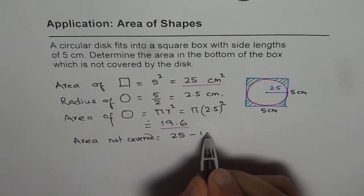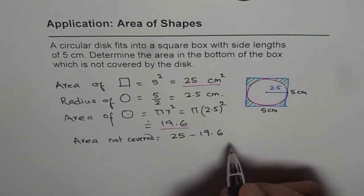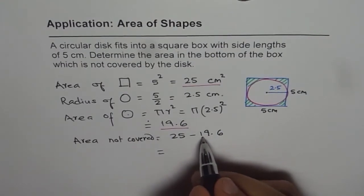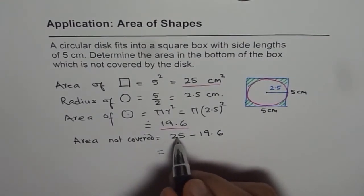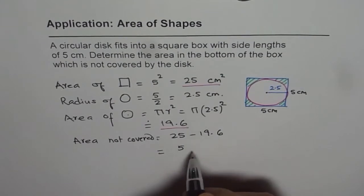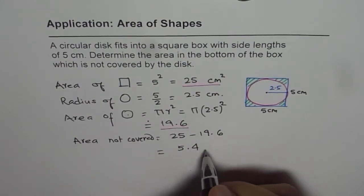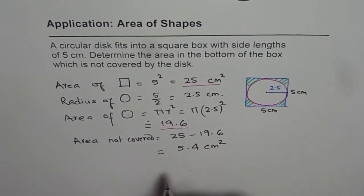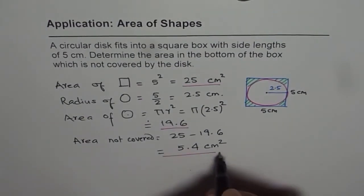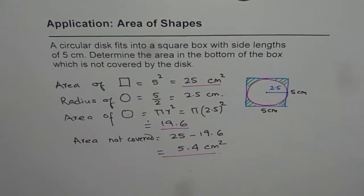19.6 is close to 20. 25 take away 20 is 5, and with decimals we get 5.4. So the answer is 5.4 centimeters squared. The area not covered is 5.4 centimeters squared.